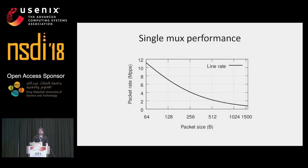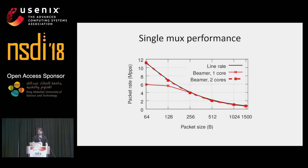We set out to measure the performance of a single mux, bombarding it with synthetic traffic consisting of packets of different sizes. On one core, Beamer can do six million packets per second and can achieve line rate for packets larger than 256 bytes. Adding a second core allows our muxes to do line rate for packets of all sizes. In comparison, the stateful solution does less than three million packets per second — roughly half the performance of our muxes.